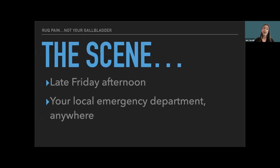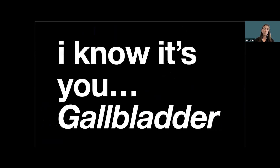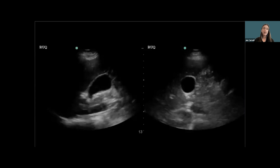Our first case is a Friday afternoon in pretty much any emergency department. A 56-year-old gentleman comes in with a host of medical problems, complaining of bloating of his abdomen and some right upper quadrant pain. On exam he has a little bit of wheezing, a little cough, and some edema, but he convinces me this is all baseline for him — nothing new. So I move on and decide to look at his gallbladder.